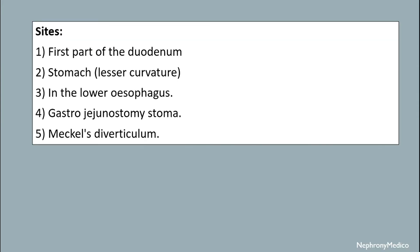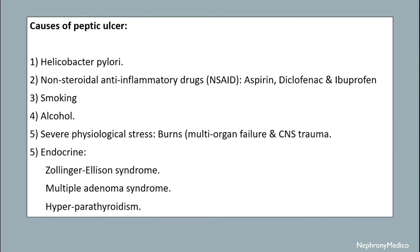Sites include the first part of the duodenum, stomach along the lesser curvature, lower oesophagus, gastrojejunostomy stoma, and Meckel's diverticulum. Causes of peptic ulcer: most commonly due to Helicobacter pylori, NSAIDs, smoking, alcohol, severe physiological stress, and endocrine factors like Zollinger-Ellison syndrome, multiple adenoma syndrome, and hyperparathyroidism.